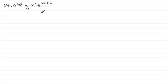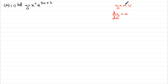We've got let y equal x squared e to the 3x plus 2. What we have is the product rule here — we've got two functions of x being multiplied together. Quick reminder of the product rule: if you've got y equals two functions of x multiplied together, uv, then dy/dx equals u times the differential of the other function, dv/dx, plus v times du/dx.